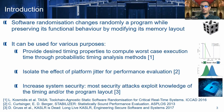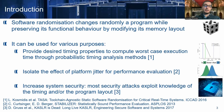Software randomization is a method that changes randomly a program without modifying the way that it behaves. For example, it changes only its memory layout. There are multiple reasons why we would like to do so. We might want to include some desired timing properties in the software in order to compute worst-case execution time through probabilistic timing analysis methods for real-time systems. Another reason is to isolate the effect of platform jitter in order to perform performance evaluation, and also we can use it to increase system security. Most security attacks exploit knowledge about the timing and the program layout, so if we modify the memory layout, we can increase our defense against these attacks.